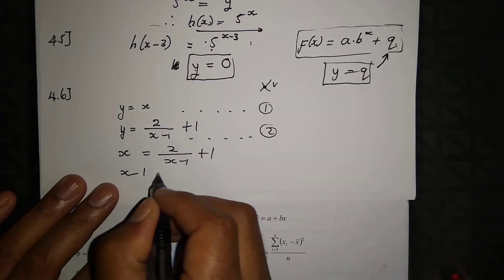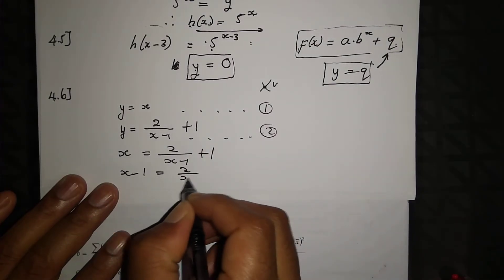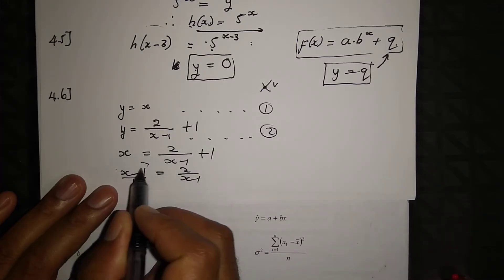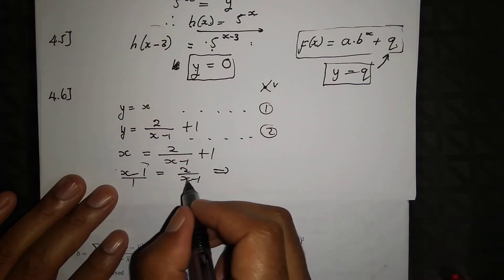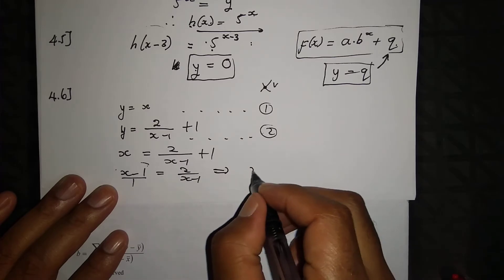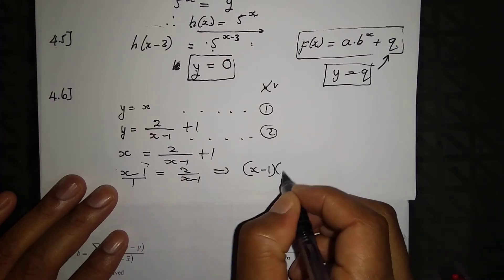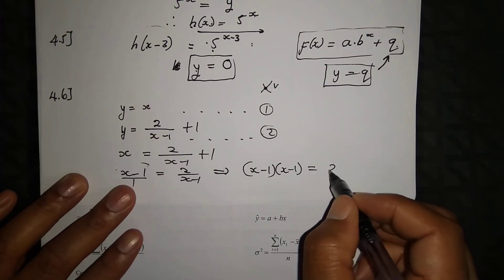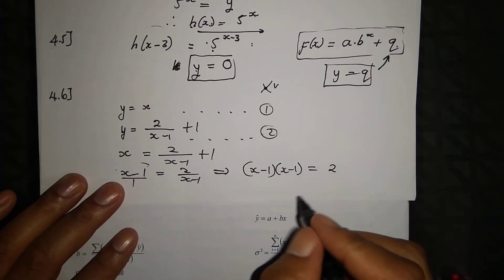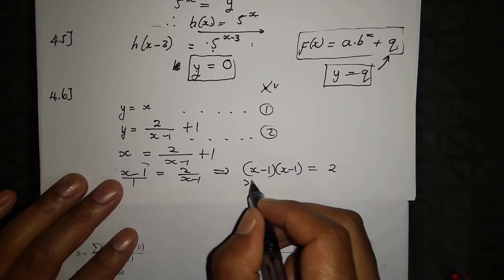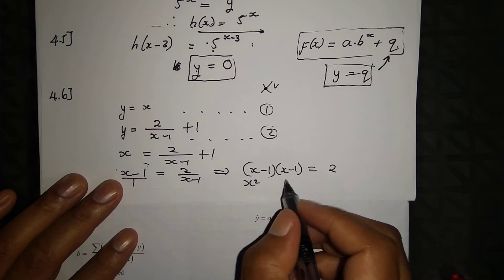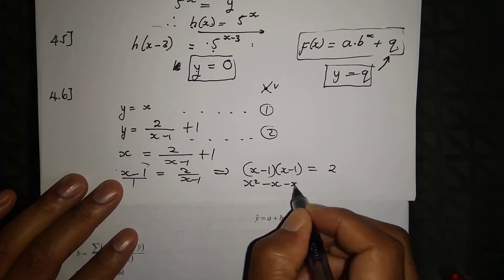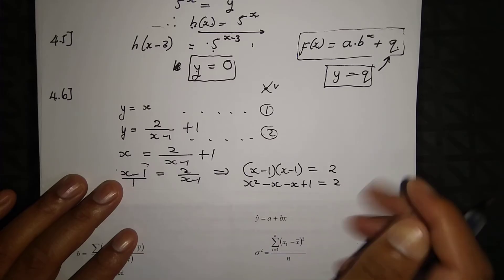Substituting y equal to x into g and simplifying: multiply both sides by (x minus 1), giving x times (x minus 1) equal to 2. Expanding the brackets: x squared minus x minus x plus 1 equal to 2, which gives x squared minus 2x plus 1 equal to 2.